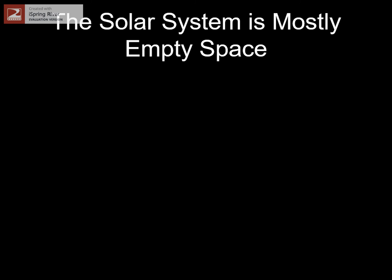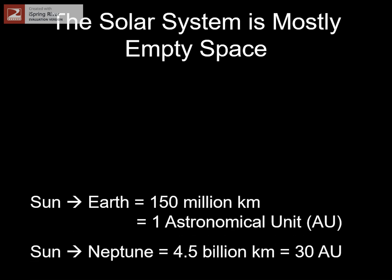Finally, even though there are all of these planets, dwarf planets, asteroids, comets, moons, and other little objects, our solar system is still mostly empty space. Our Earth is about 93 million miles, or 150 million kilometers from the Sun. Astronomers call this distance an astronomical unit. Neptune, the outermost planet, is about 30 times farther — 30 astronomical units, or about 4.5 billion kilometers away. Note that's billion with a B, not just million with an M.